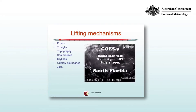So we've talked about fronts, troughs, and topography, which also plays a role — flow over topography causes the air to be lifted. Sea breezes where convergence occurs, dry lines, and outflow boundaries from thunderstorms.